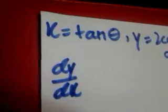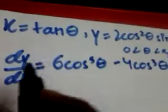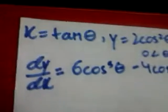A pair of parametric equations has been given: x equals tan theta and y equals 2 cos squared theta sin theta, for theta between 0 and pi by 2. We have to show that dy by dx equals a given expression. Now let's begin.